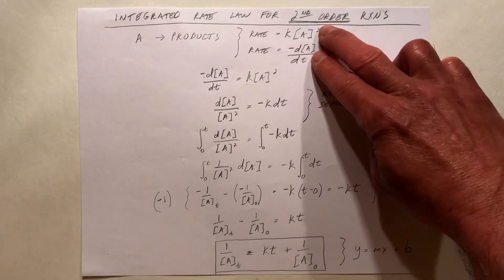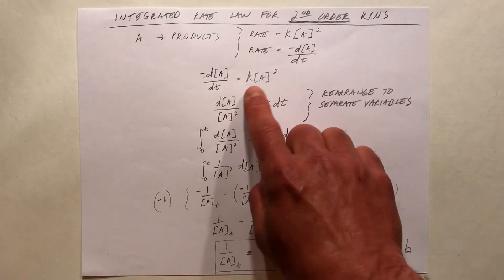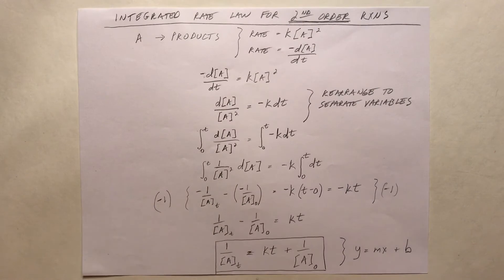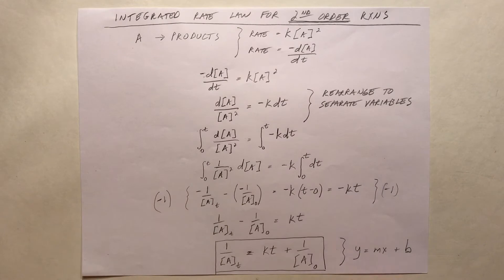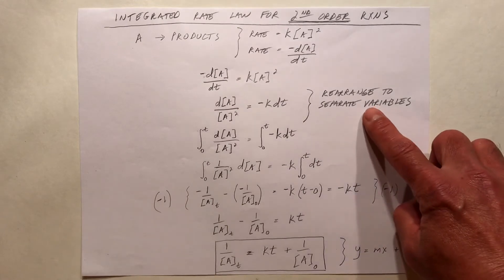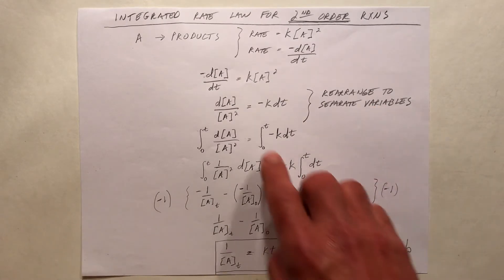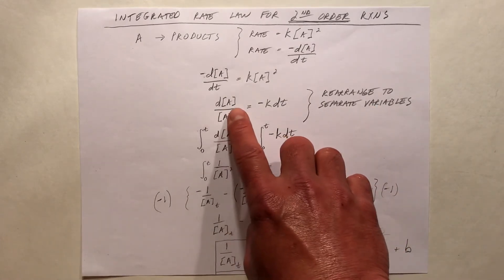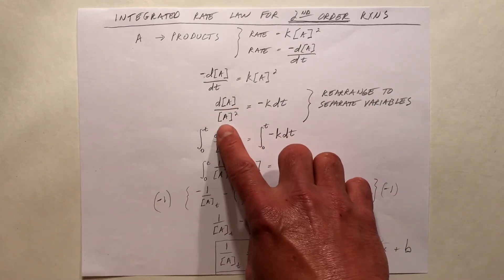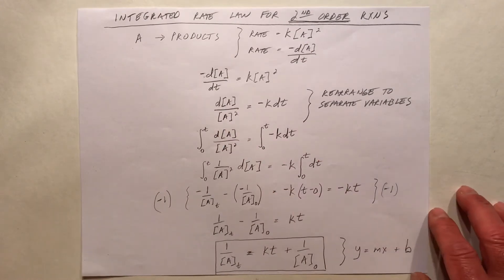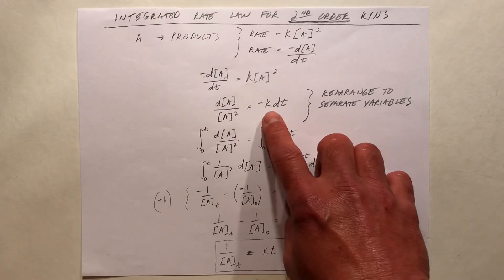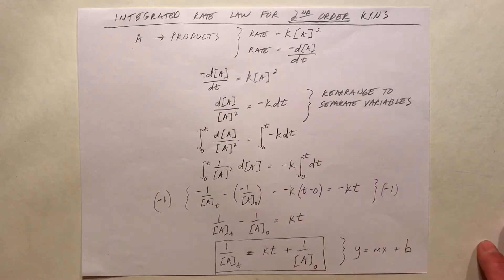Let's make these two expressions of rate equal to each other. Then let's rearrange that equality so that we can separate the variables. On the left, we have d[A] divided by [A] squared, and on the right-hand side we have negative K dt.